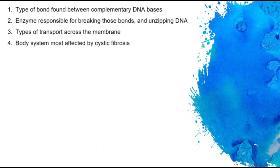Number four. The body system that's most affected by cystic fibrosis. You should know that there's three that are really affected, but one of them is really, really affected. Five. What are the levels of classification? Six. What are the three domains of life?